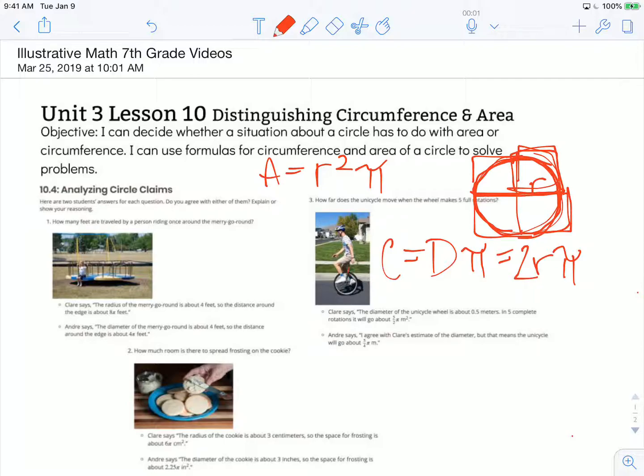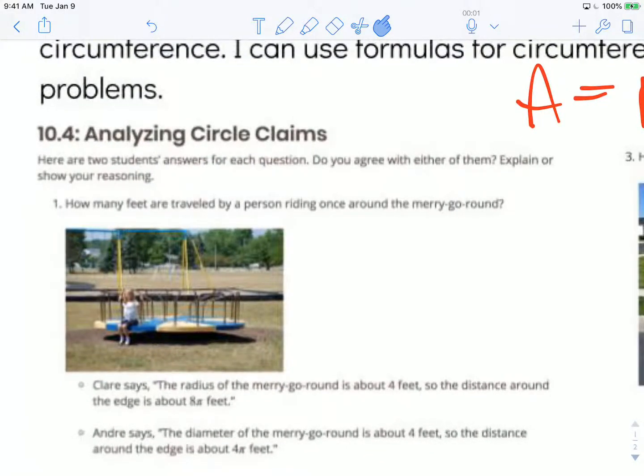Let's look at this first scenario, analyzing circle claims. Here are two students' answers for each question. Do you agree with either of them? Explain or show your reasoning. How many feet are traveled by a person riding once around the merry-go-round? So if we're thinking about this person going all the way around, we're going to be looking at circumference. So we want to calculate the circumference of that merry-go-round.